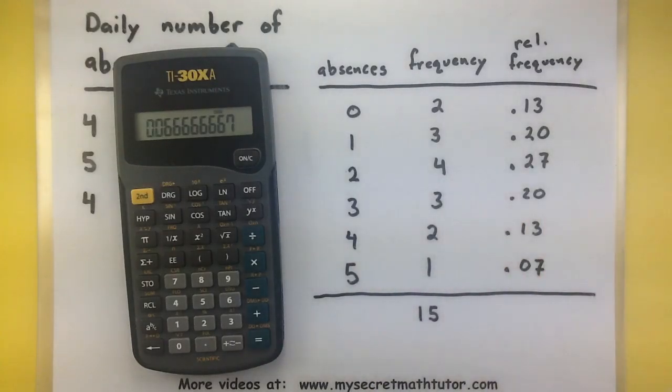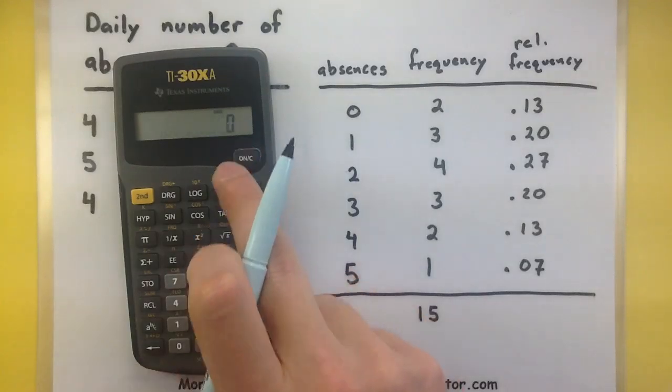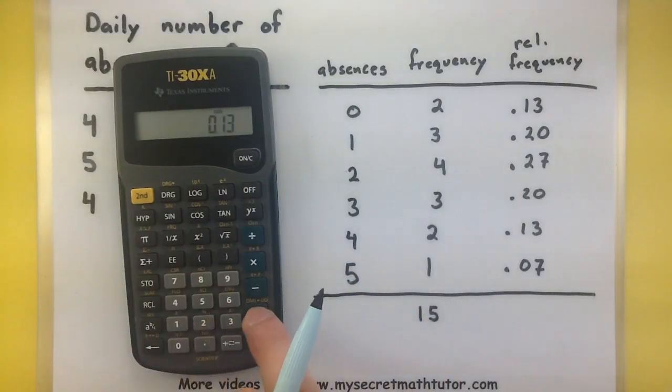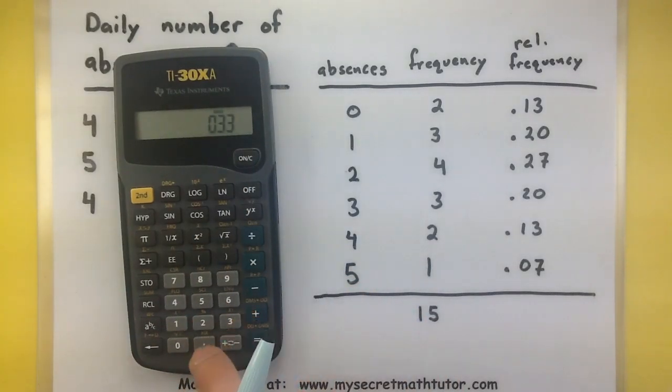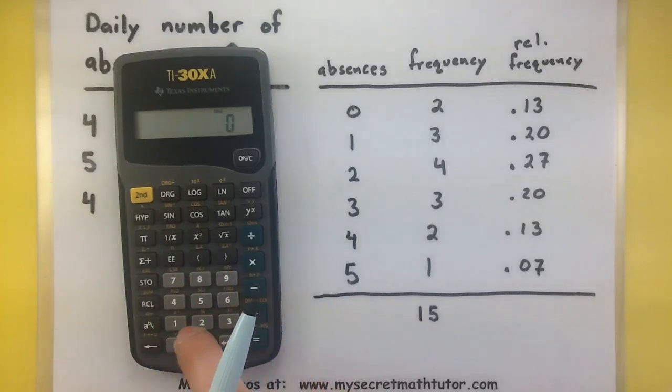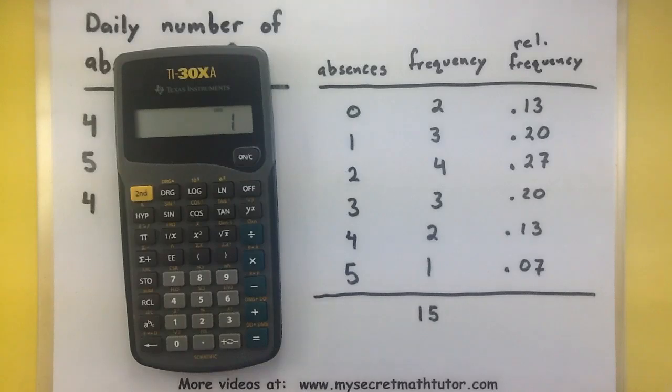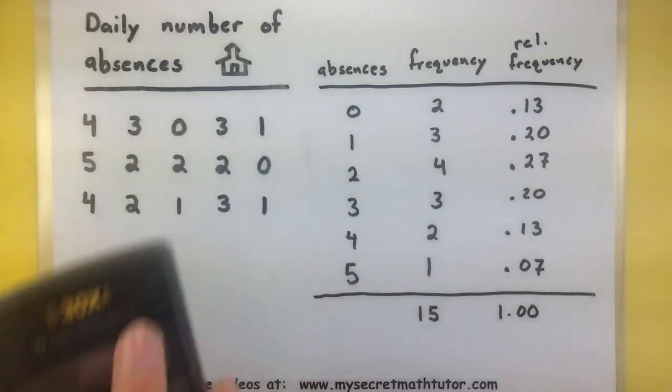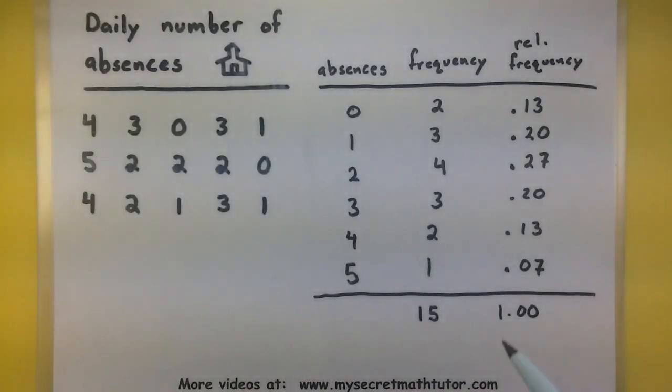Let's go ahead and add our relative frequency to see if it adds up to 1. Sure enough, the total is 1, so I know I'm on the right track. And that's how you make a relative frequency chart. You just scale back all of your frequencies using the total frequency.